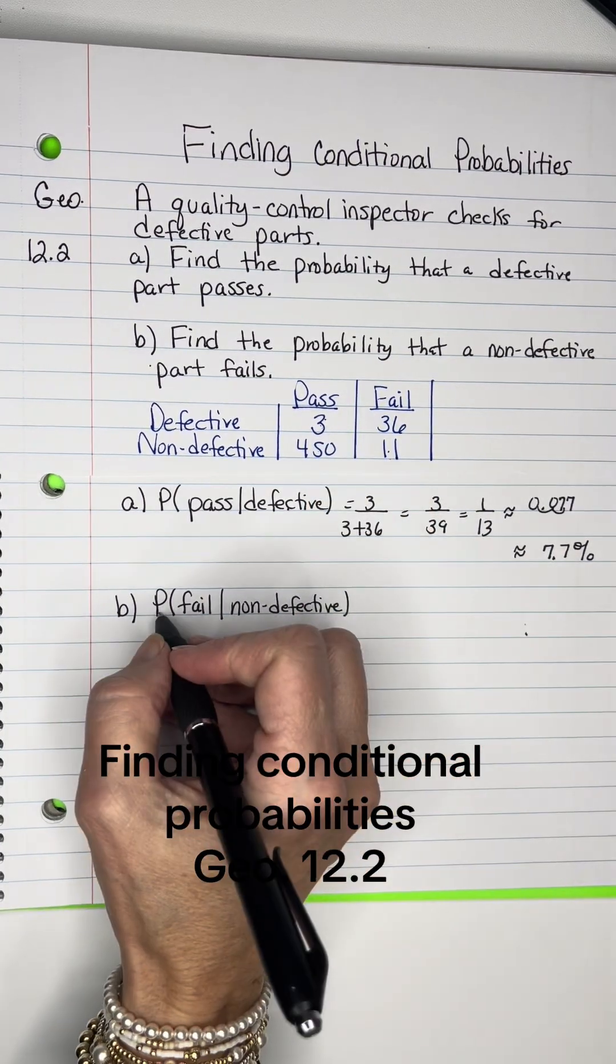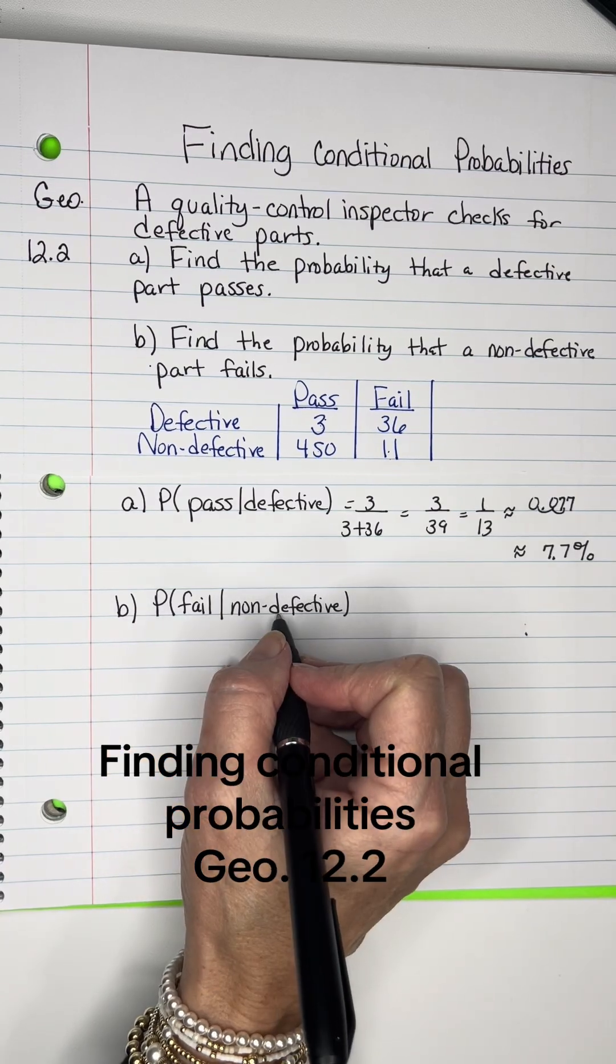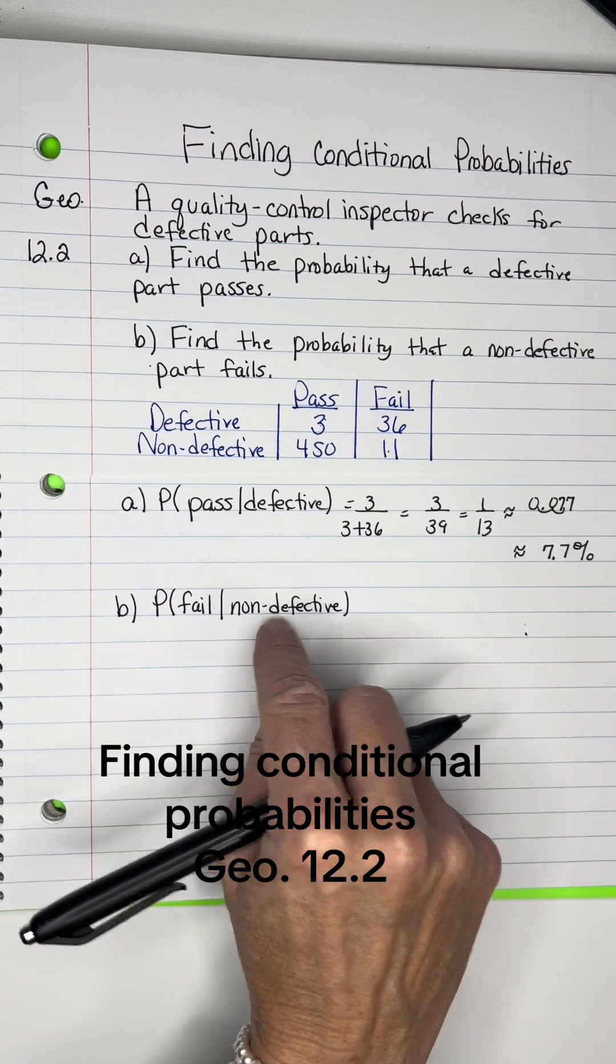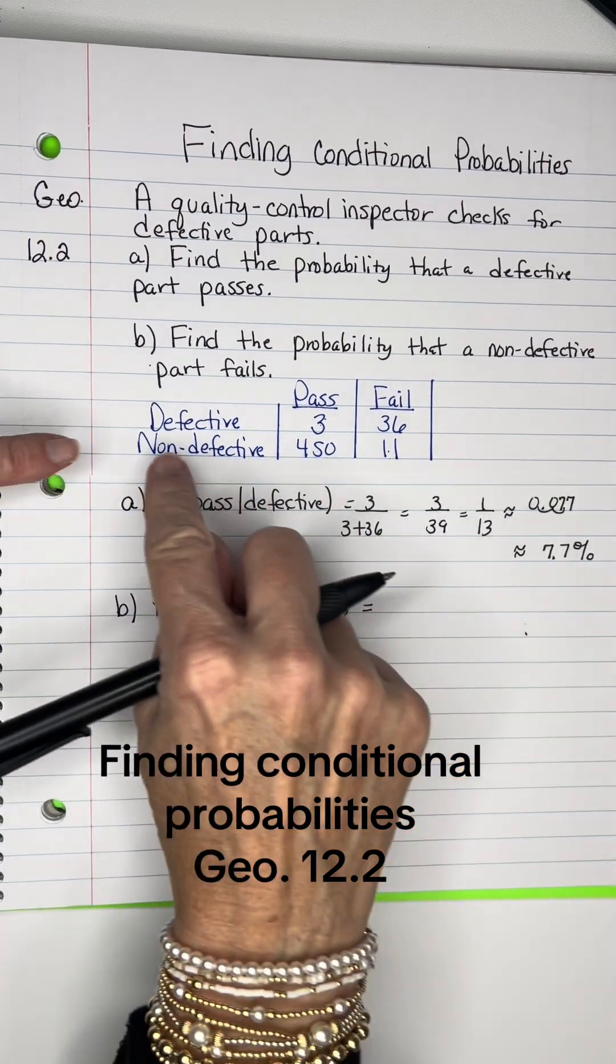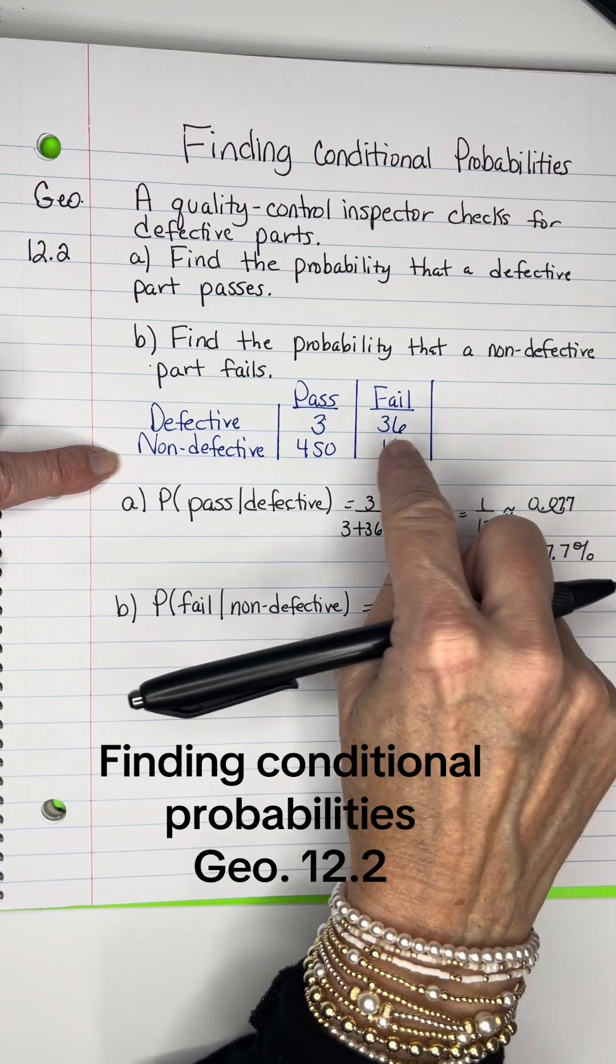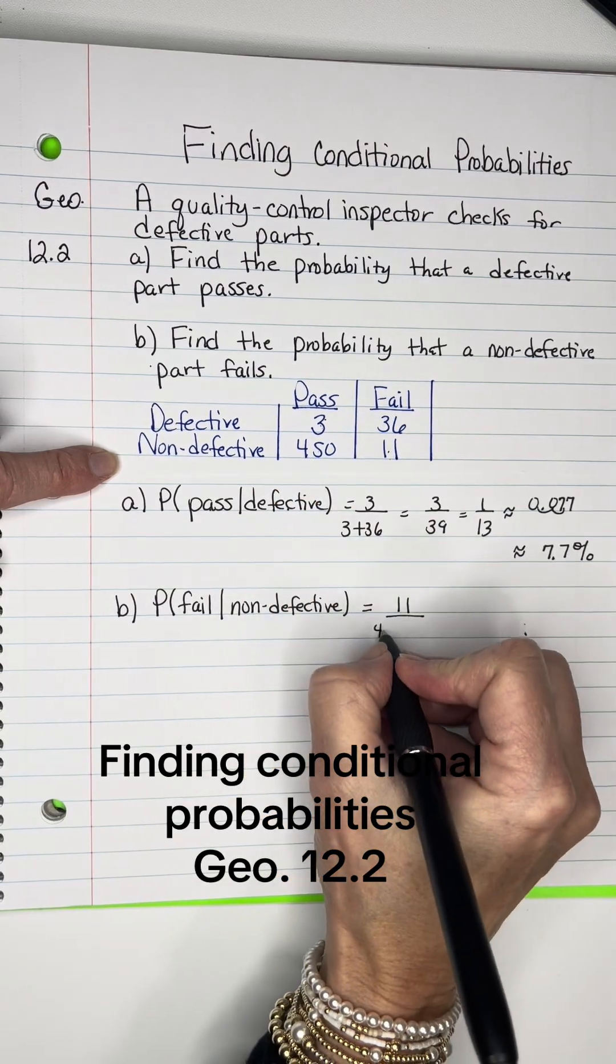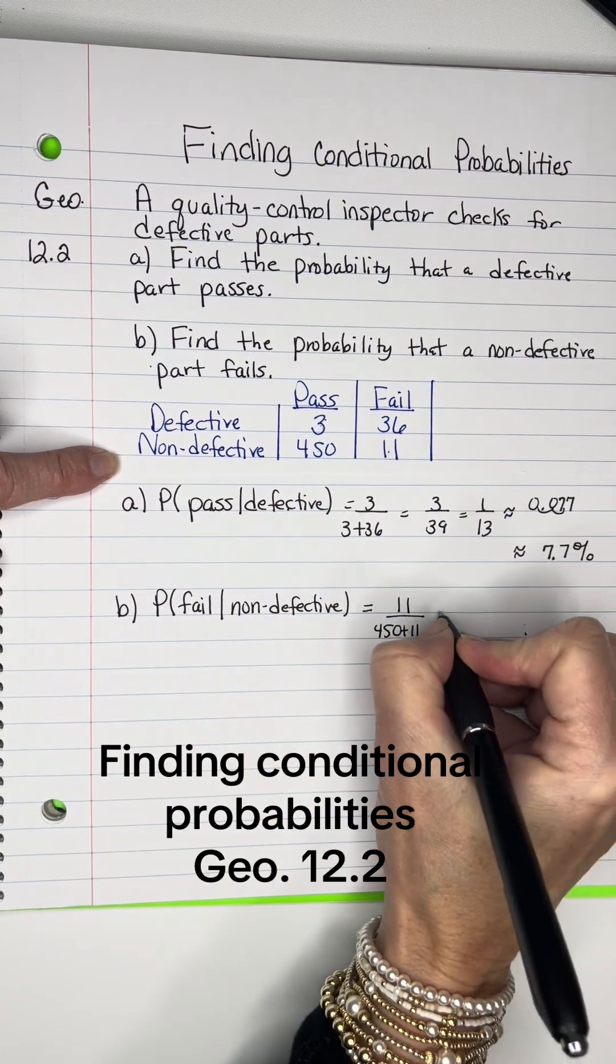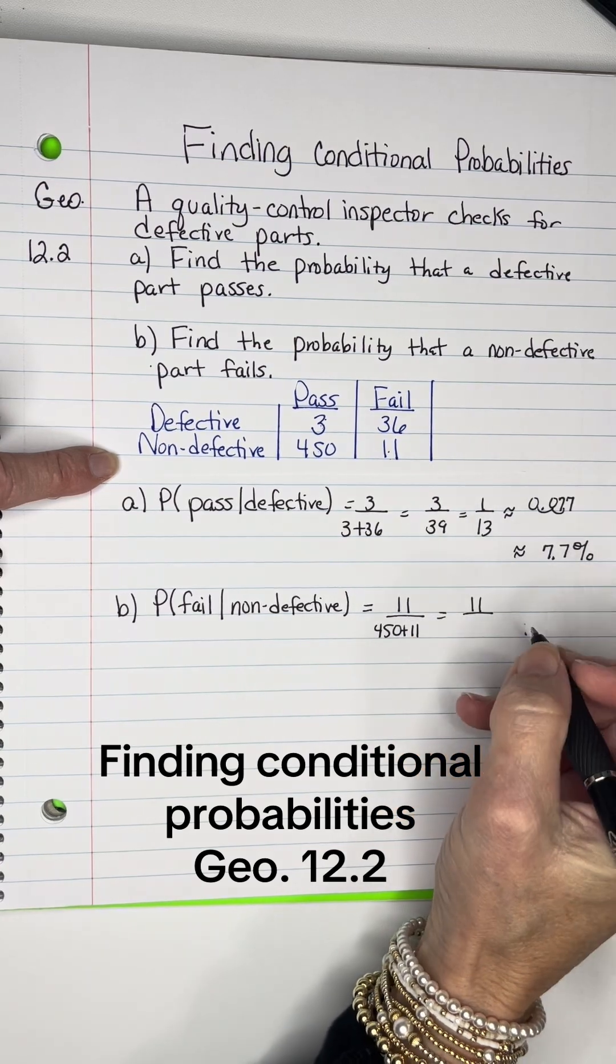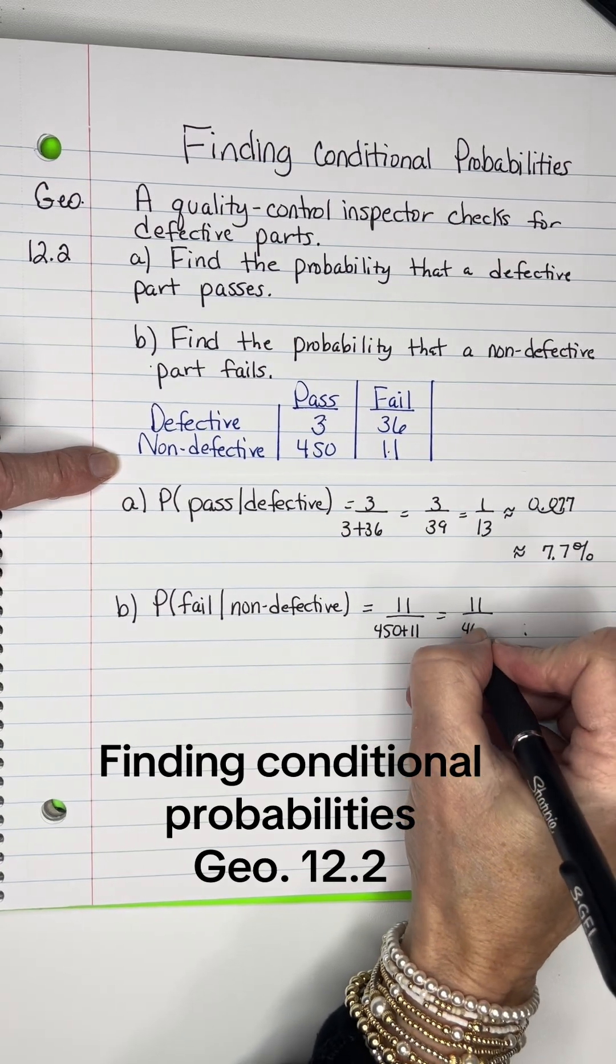Now let's do the probability that it failed and it was non-defective. It failed and there was nothing wrong with it. Looking at this row here, 11 failed out of the 450 plus 11. So there's 11 out of 461.